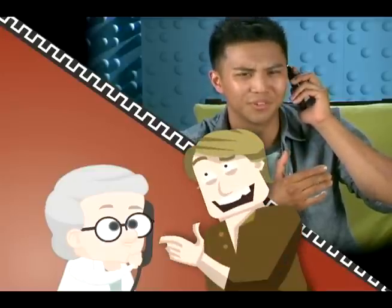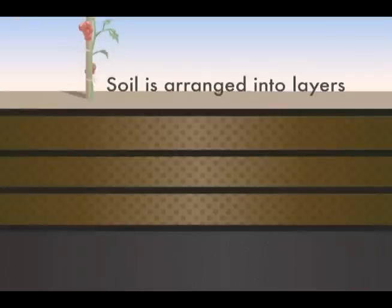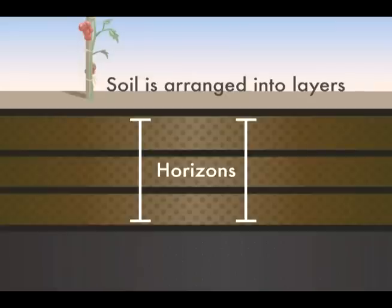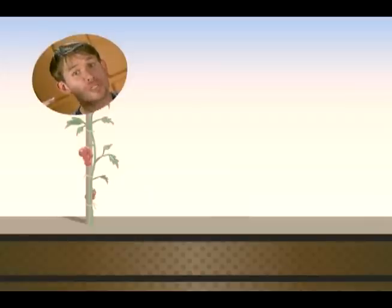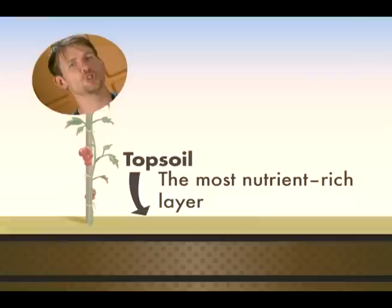Looks like our girl found her spot. Like many things in the natural world, soil is arranged into layers called horizons — they're called horizons because they're horizontal. The layers of rock beneath all those horizons is called the bedrock. The topmost layer of soil is called topsoil. This freshly formed soil is generally the most nutrient-rich layer, because there's a lot of freshly decayed dead plant and animal material mixed into it.